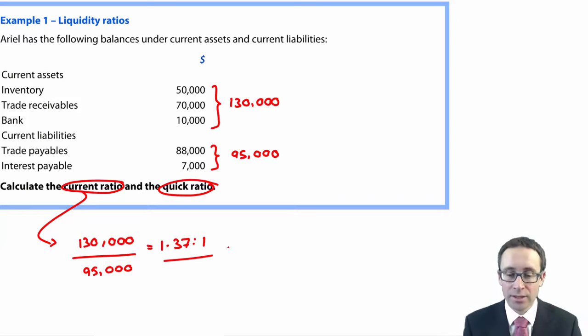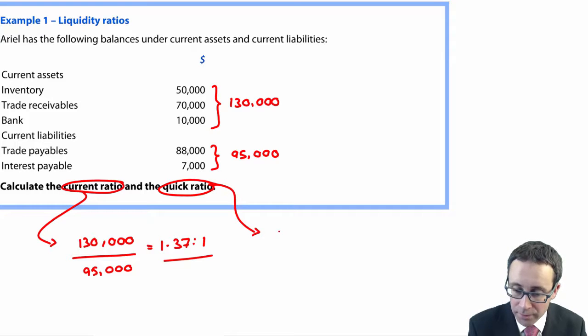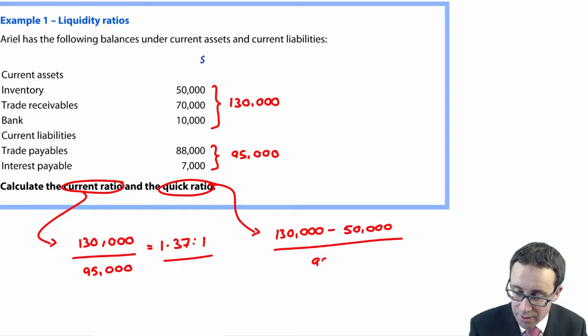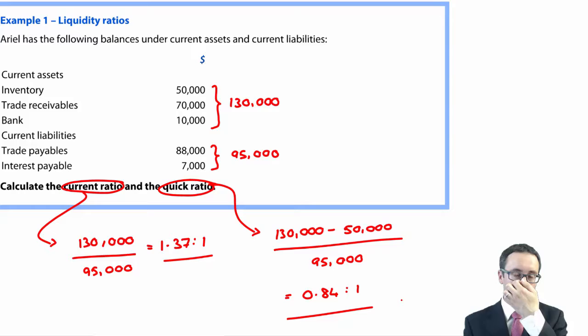For your quick ratio, that takes the current assets of 130 and deducts the inventory of 50, and again divides it by the 95,000. That gives 0.84 to 1. So there is ever so slightly more liabilities than what you have with regards to more liquid assets. But hopefully that inventory will be quite fast moving. You'll be able to sell it reasonably quickly to compensate. But if the payables and interest were due on demand, you may struggle to pay things back.